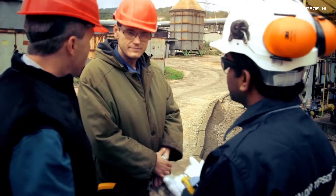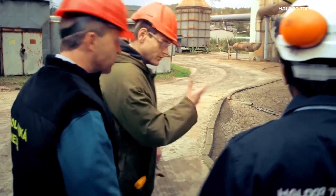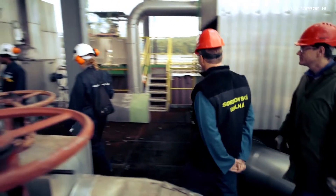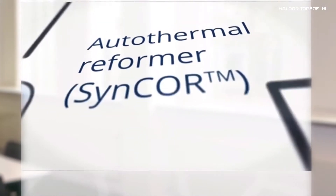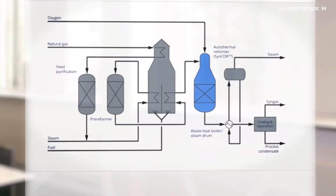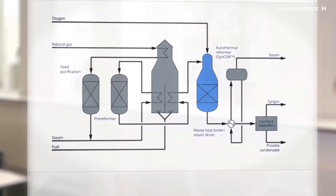Today I'll tell you a bit about what we do in the engineering project. First we find out what our customer needs and establish all the design requirements together. Once we have that in place the overall plant design and layout will be decided, based on complex calculations from our simulation programs providing the mass and energy balance of the entire plant.